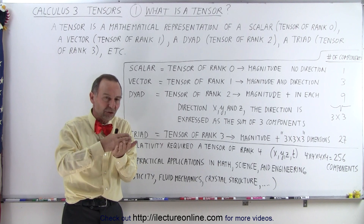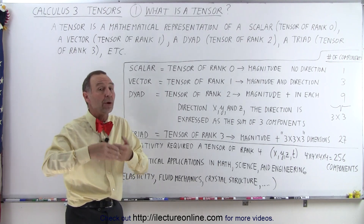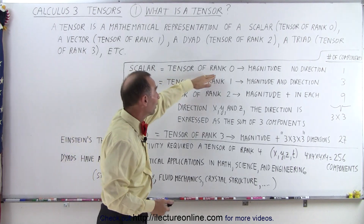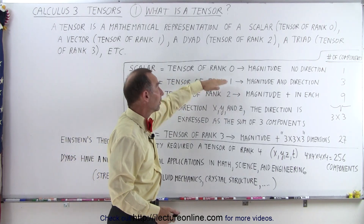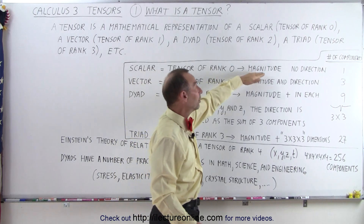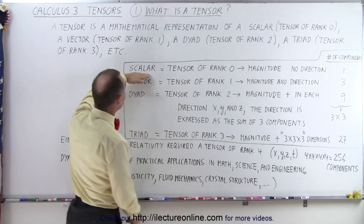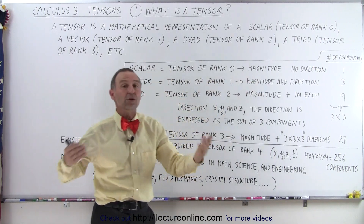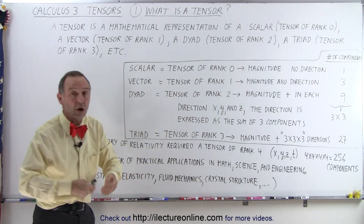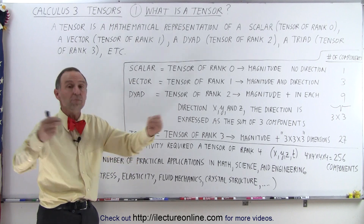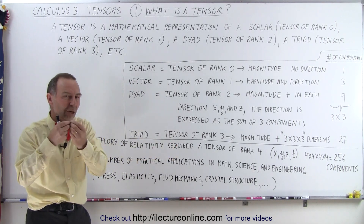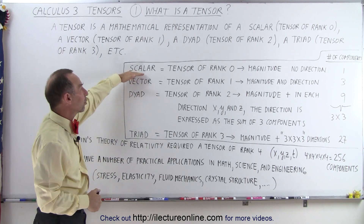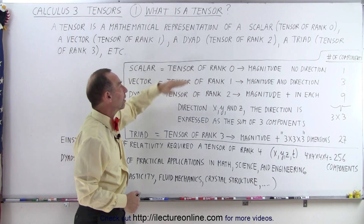We have tensors of various ranks, and we're already familiar with two of those. Tensors of rank zero are scalars. A scalar is something that has just a simple magnitude and no direction. So if I ask how long is this object and I tell you it's two meters long, that's just a single number — there's no direction associated with that. That's what's called a scalar, and therefore a tensor of rank zero.